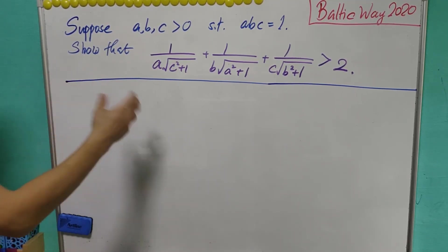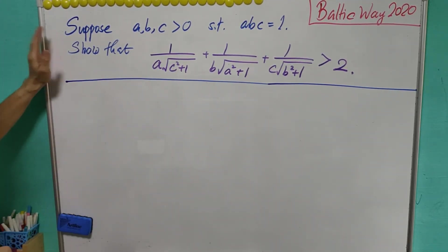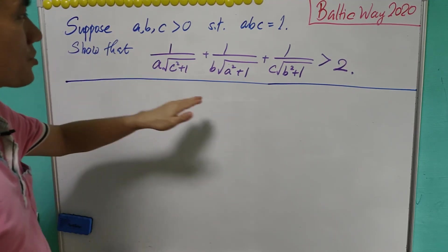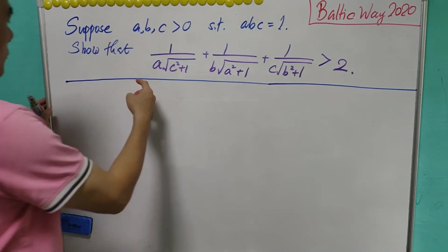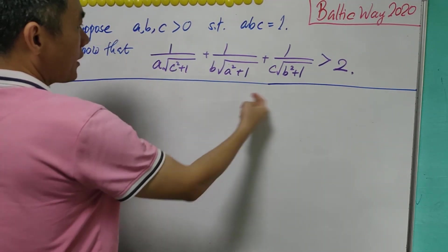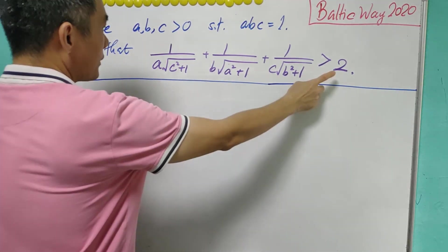Today we're going to discuss an inequality. Suppose a, b, c are positive such that the product abc equals 1. You're asked to show the cyclic expression here is greater than 2.